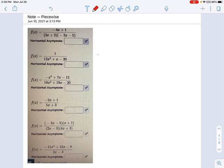And what I mean by that is a comparison of the factors of x on top and bottom. Let's use this first one as an example.